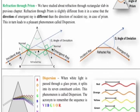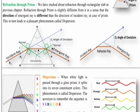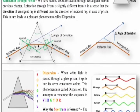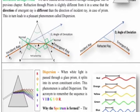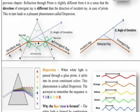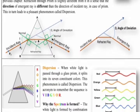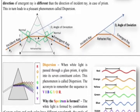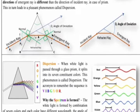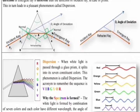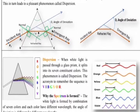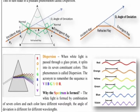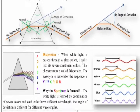Different colors of light have different wavelengths. The white light is formed by a combination of seven colors, and each color has a different wavelength. The angle of deviation is different for different wavelengths.